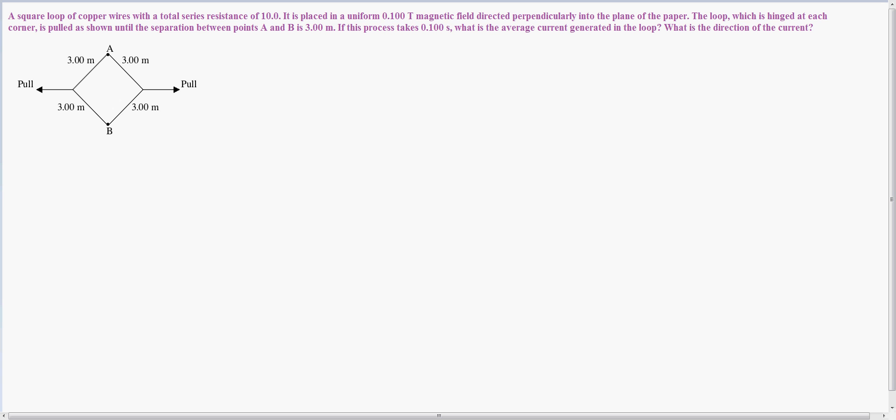So we have a magnetic field going into the page. B equals 1 tesla. The change of time is equal to 0.1 seconds. The total R is equal to 10 ohms.